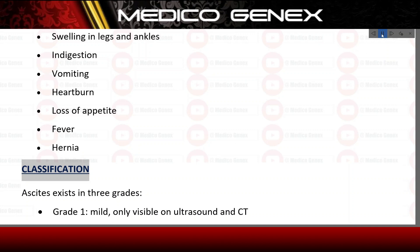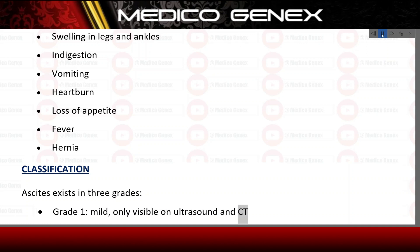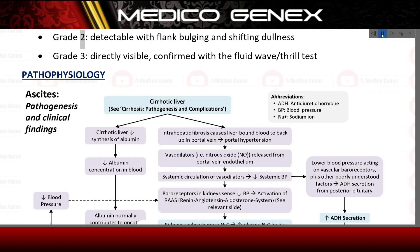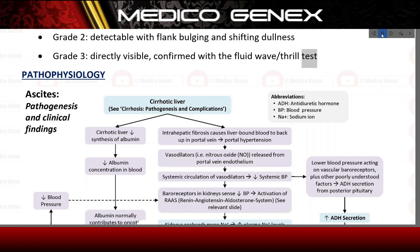Classification. Ascites exists in 3 grades. Grade 1 is mild, only visible on ultrasound and CT. Grade 2 is detectable with flank bulging and shifting dullness. Grade 3 is directly visible and confirmed with the fluid wave thrill test.